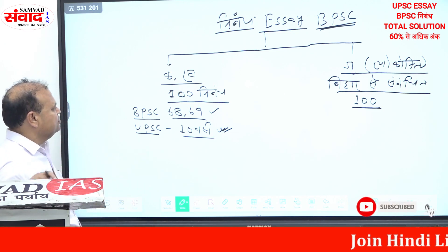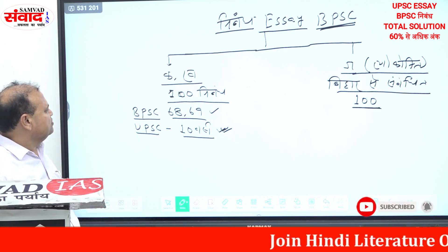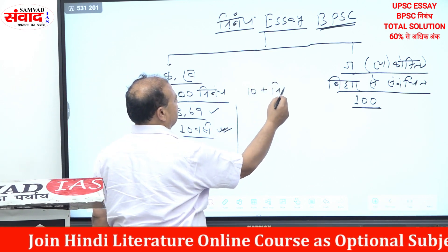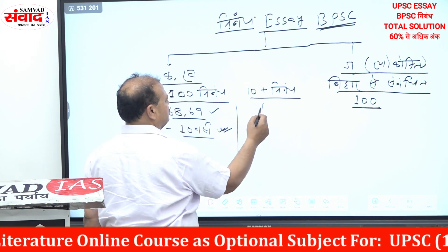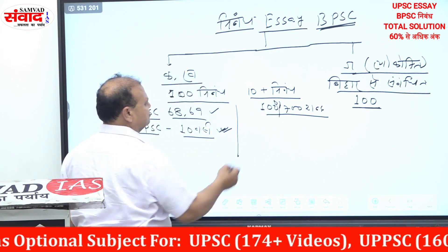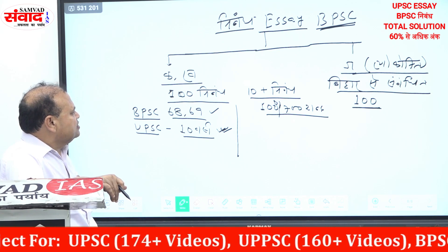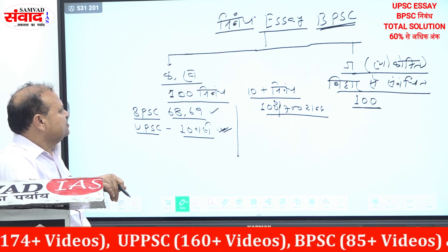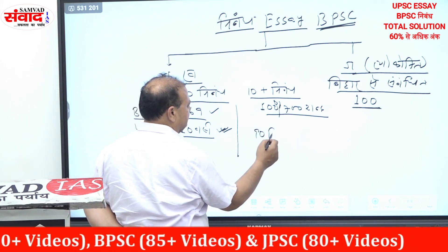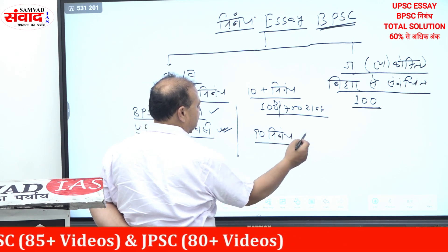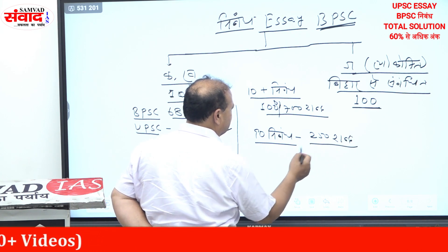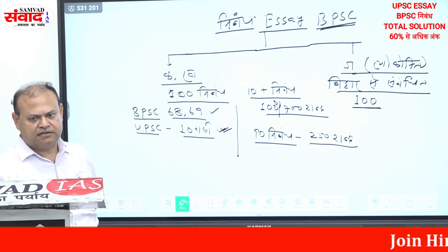We can see the total of 100 nibandhs, and some of these nibandhs are about 10 plus nibandhs. We will write it in 1000 or 800 nibandhs, and in UPSC we will write it in 1000 and 700 nibandhs, going through at 600 nibandhs.